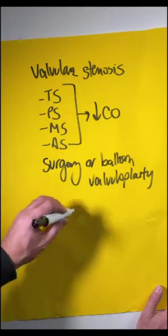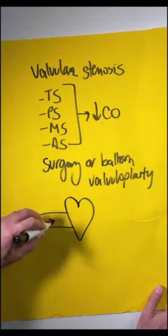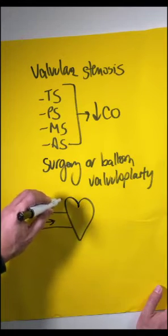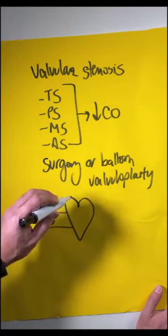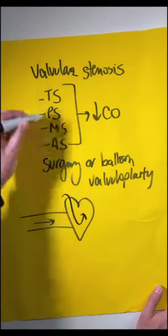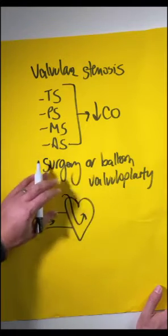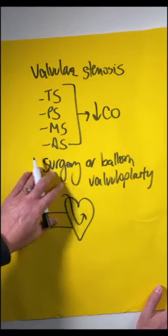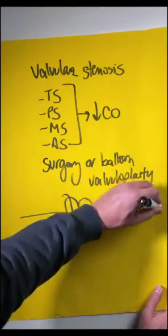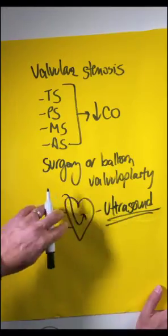So we went through a lot. Just remember that obstructive shock is any situation where you have a problem getting blood in like SVC syndrome, getting blood into the right ventricle like tension pneumothorax or pericardial tamponade, problems getting blood through the heart such as any of these valvular lesions, or pulmonary embolism. And remember the fastest, simplest, and most non-invasive way to diagnose all of these things are, you guessed it, ultrasound. So learn how to do these tests so you can rapidly diagnose this type of shock.